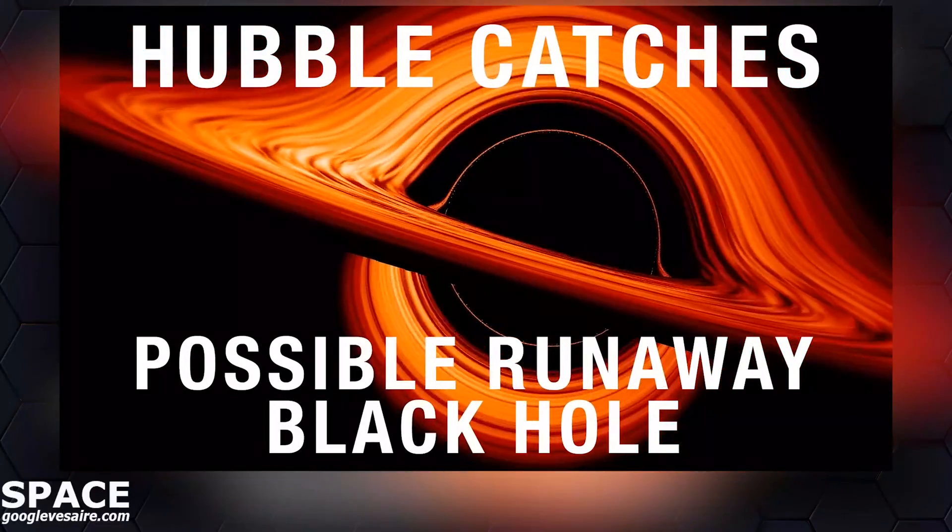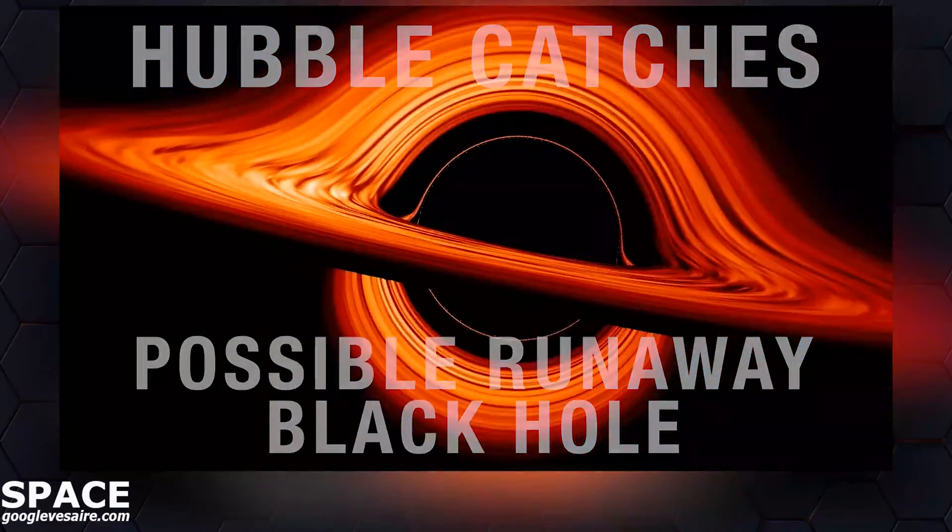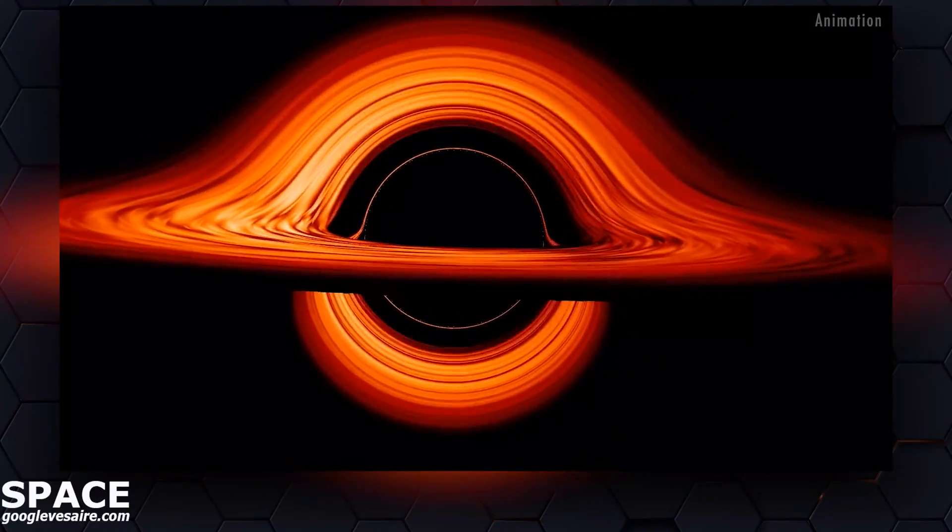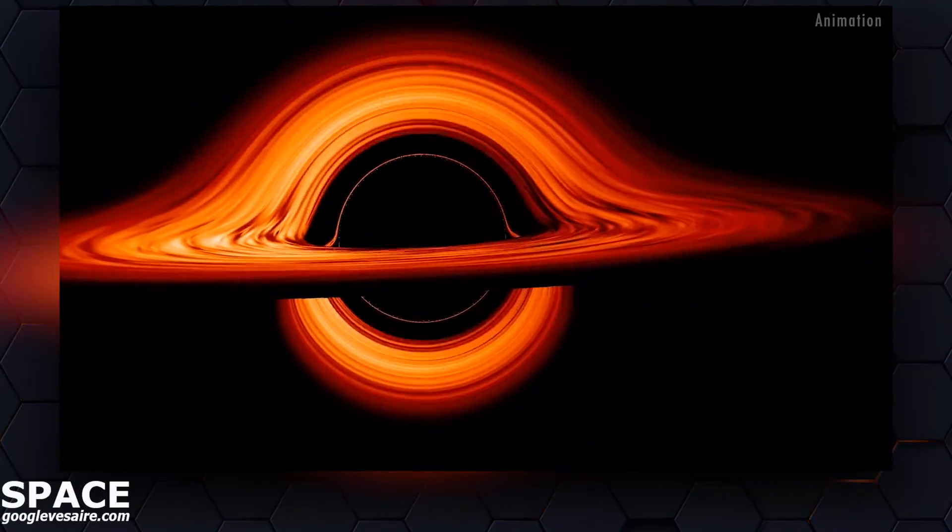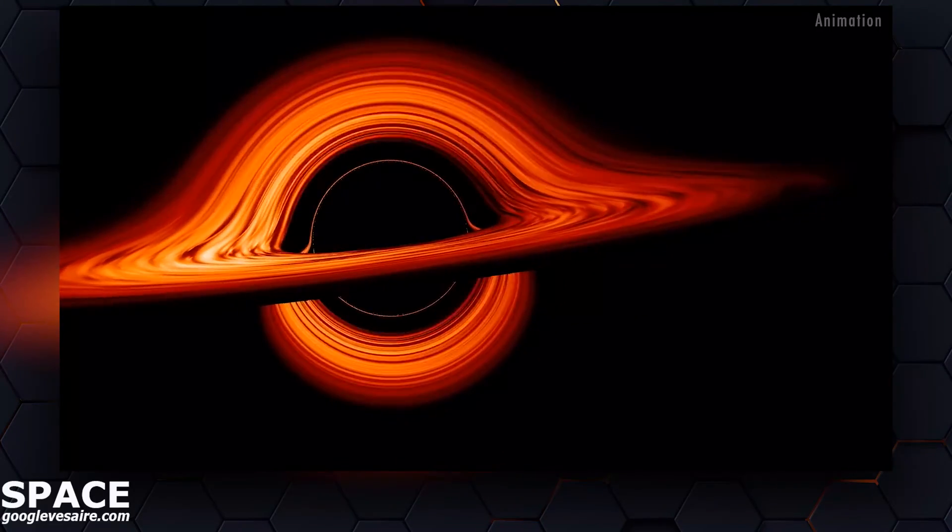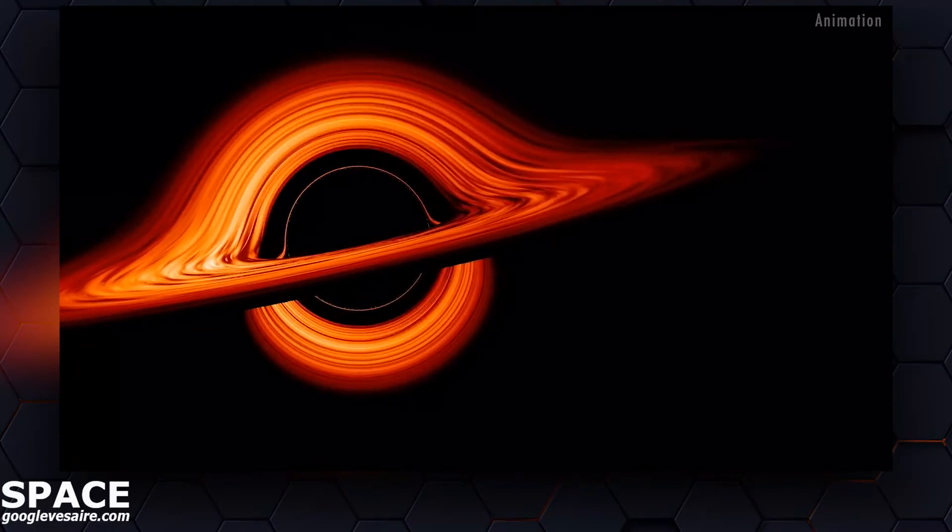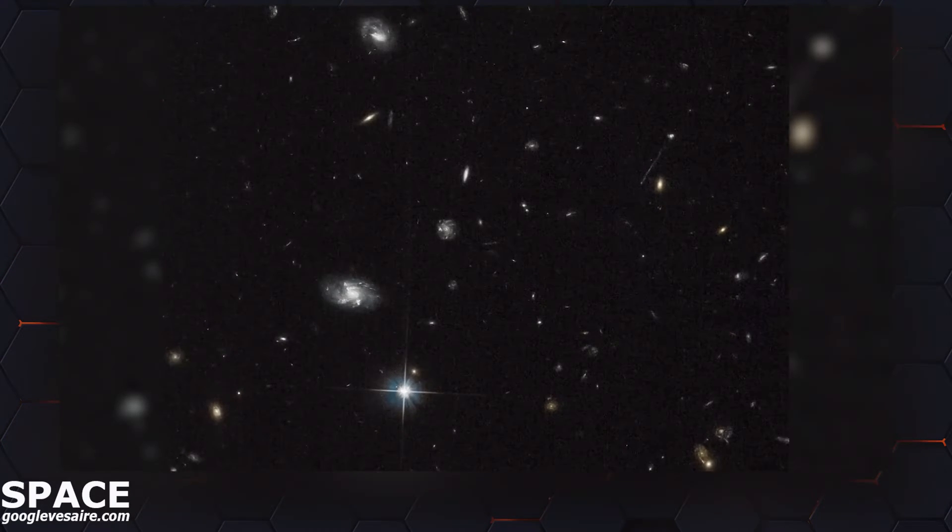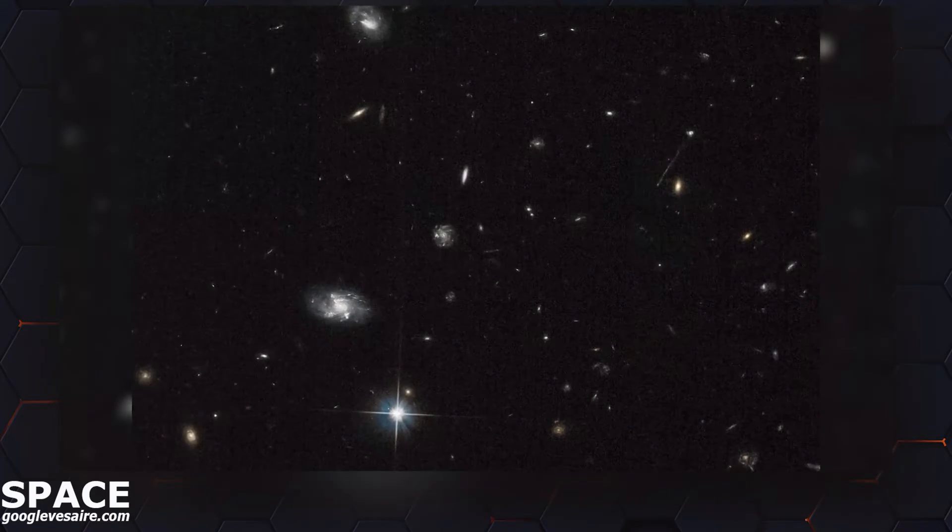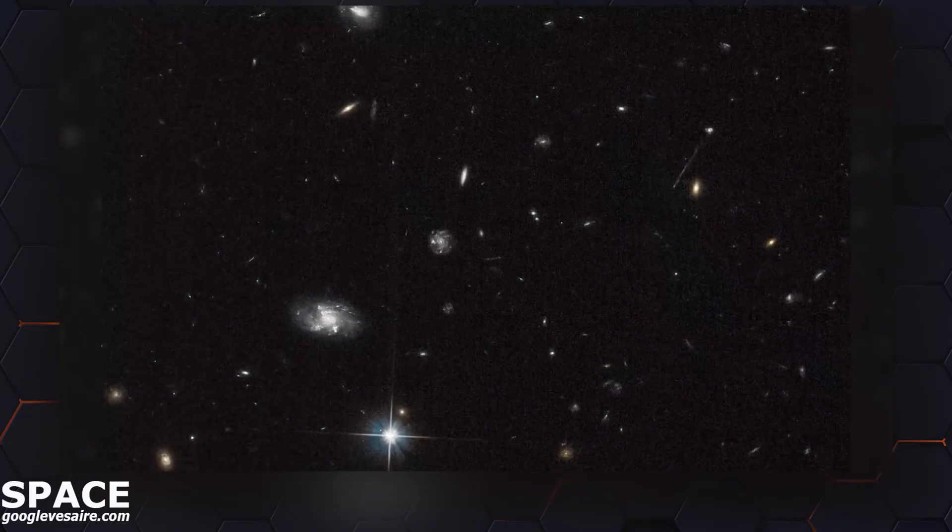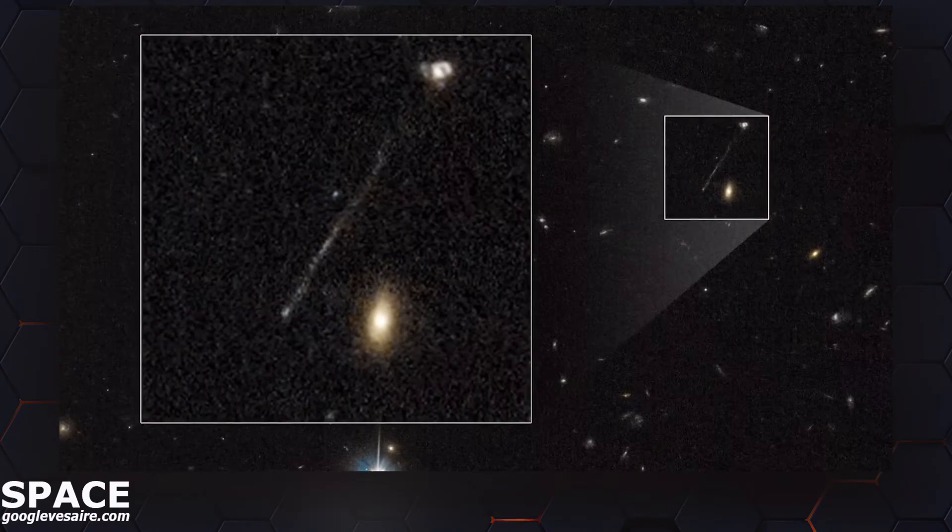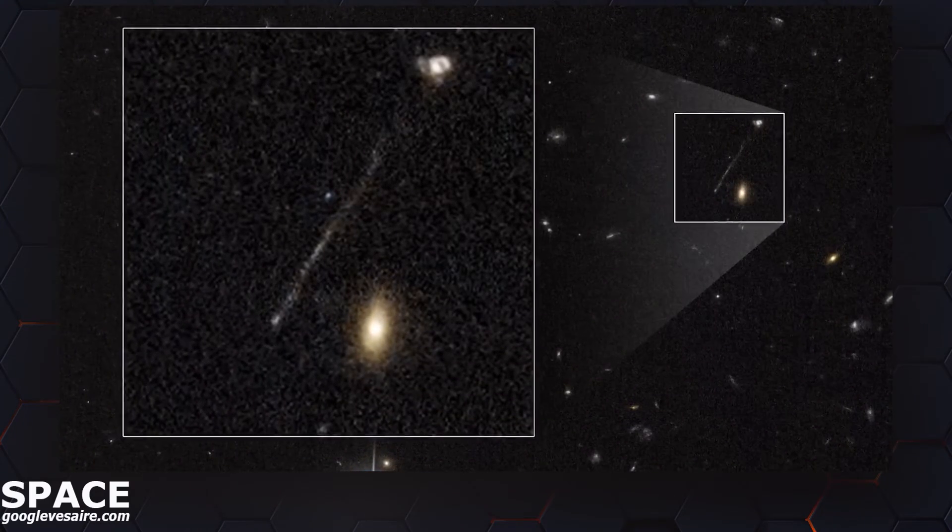There's an invisible giant monster on the loose. It's barreling through intergalactic space fast enough to travel from Earth to the Moon in 14 minutes, but don't worry—luckily this beast is very far away. This potential supermassive black hole, weighing as much as 20 million suns, has left behind a never-before-seen 200,000 light-year-long trail of newborn stars. The streamer is twice the diameter of our Milky Way galaxy.